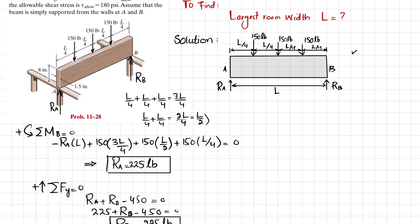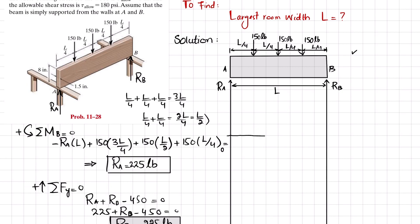Now that we have both Ra and Rb, we can draw the shear force and bending moment diagram to get the maximum shear force and maximum bending moment. Drawing a vertical axis for the shear force diagram with x representing the length of the beam, let each division be 100 pounds. At point A, we have Ra = 225 pounds, so we plot 225.